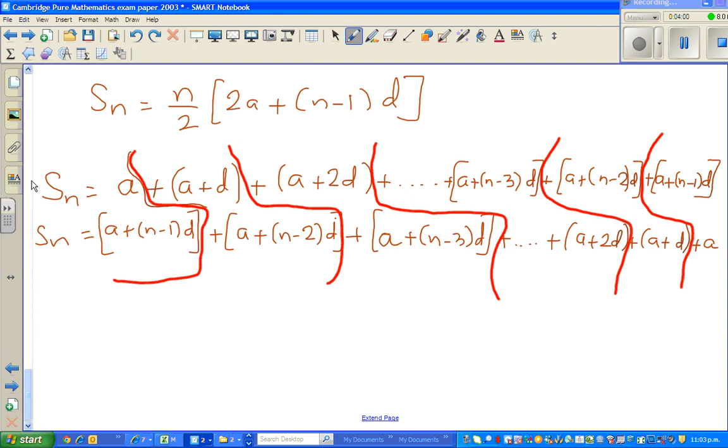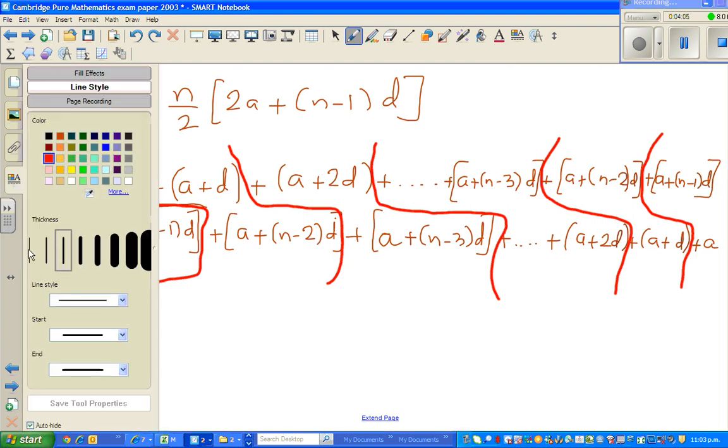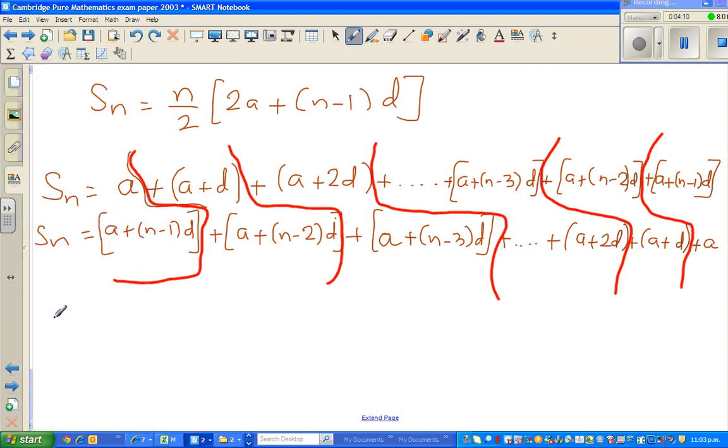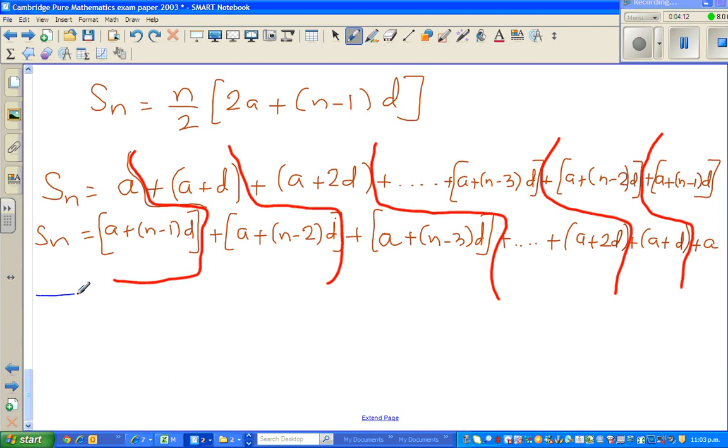Using blue now. I'm going to add this and this. Can I say S_N plus S_N is 2 times S_N. If I add this and this, A plus A plus N minus 1 times D is 2A plus N minus 1 times D.